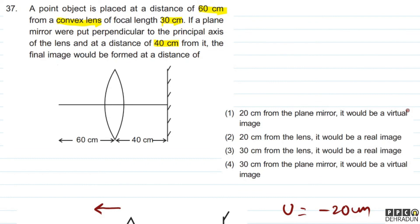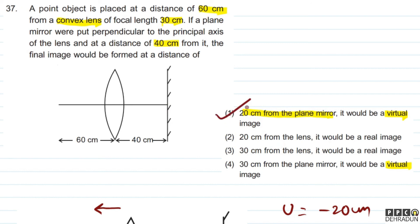So the correct answer for this question: the image is virtual and forms 60 cm to the right of the lens, which is 20 cm from the plane mirror. Therefore the correct option is option number 1.